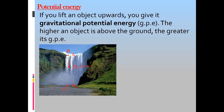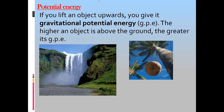Similarly, a coconut attached to a tree above the ground has only potential energy. When it is falling and still above the ground, it has both potential and kinetic energy. When it just hits the ground, the energy transforms into other forms.